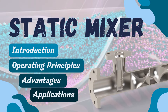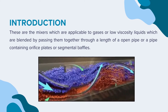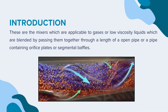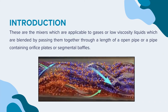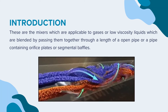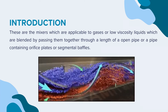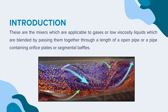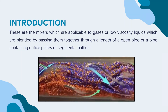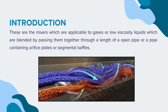Hello guys, welcome back to our YouTube channel. Today in this video we will be discussing about a type of mixture which is worldwide used nowadays, and that is the static mixer. As you all know, the chemical industry relies heavily on efficient mixing processes to achieve desired product quality and process efficiency. Traditionally, mechanical mixers and agitators were used to achieve mixing, but they often faced limitations such as high energy consumption, maintenance requirements, and uneven mixing. However, with the introduction of static mixers, these challenges have been overcome, leading to a significant advancement in chemical processes.